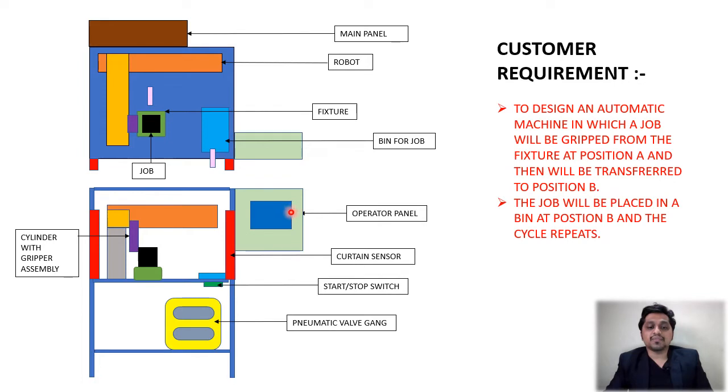We have an operator panel with the HMI to see what is happening inside the machine, we have curtain sensor for safety, we have start-stop switch to start the machine, we have pneumatic valve gang to supply air to the accessories, then we have cylinder with the gripper assembly to hold the job and to move it from one place to another place.